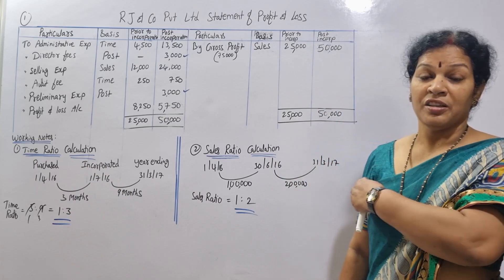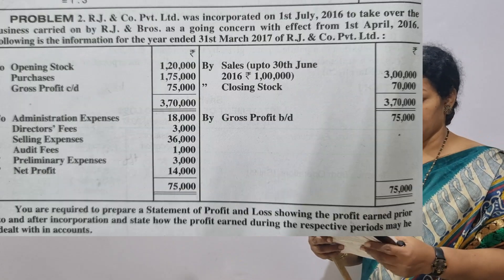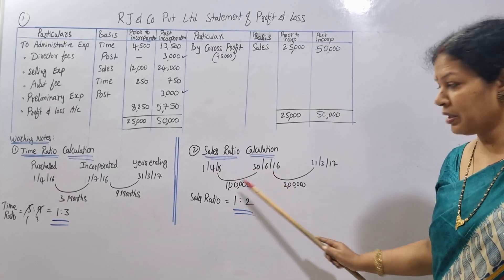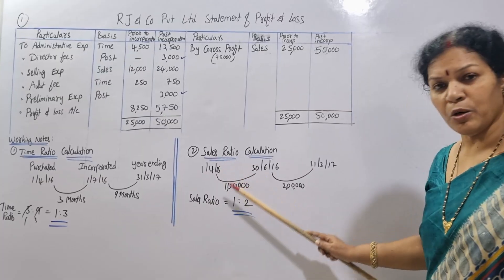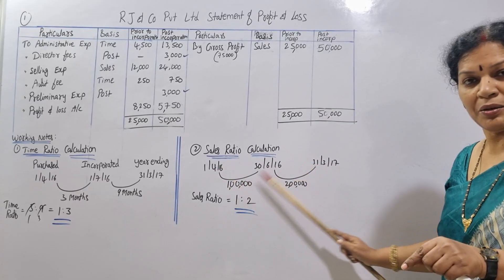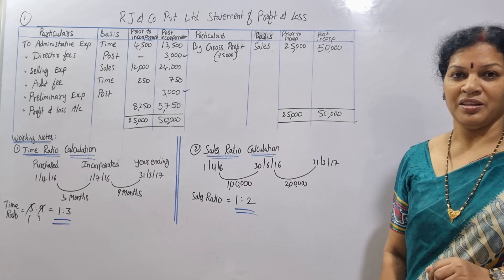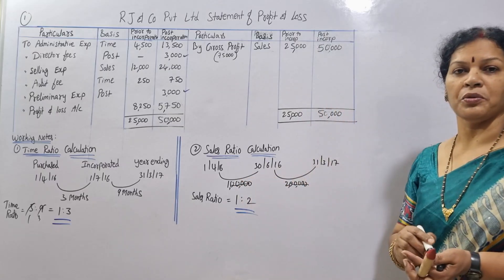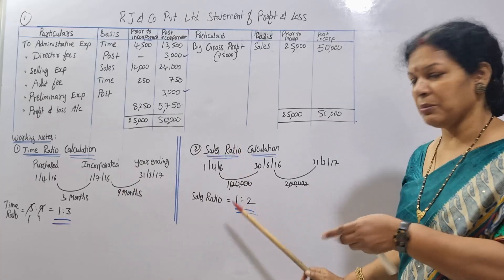Now the sales ratio: sales up to 30th June 2016 are 1 lakh. Total sales are 3 lakh. So post-incorporation sales are 3 lakh minus 1 lakh, which equals 2 lakh. Therefore the sales ratio is 1:2. The time ratio is 1:3 and the sales ratio is 1:2.